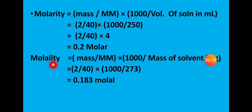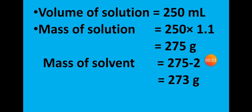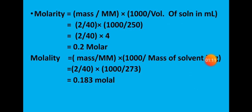This involves the volume of solution in milliliters. We substitute 2 divided by 40, multiplied by 1000 divided by 273, into the formula. The volume of solution used is 250 mL multiplied by 1.1, giving 275.